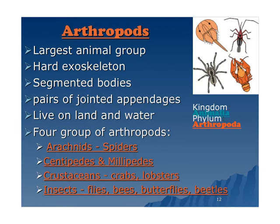The arthropods are the largest animal group. They have a hard exoskeleton, whereas we have an endoskeleton — endo means in, so our skeleton is inside our body. These have an exoskeleton on the outside. They have segmented bodies and pairs of jointed appendages. They live on land and water. There are four major groups of arthropods: arachnids, which are the spiders; centipedes and millipedes; crustaceans, like crabs and lobsters; and insects.